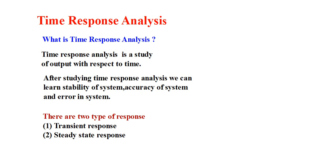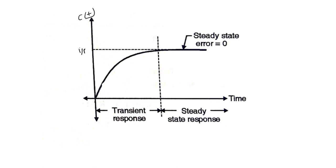Time response analysis has two types of responses: the first one is transient response and the second one is steady state response. Now we will discuss what is transient response and steady state response. Suppose a system has been given a step input.